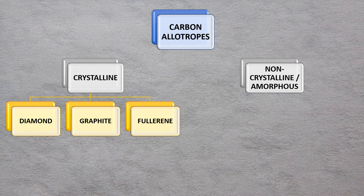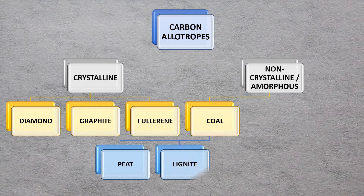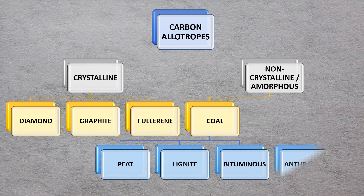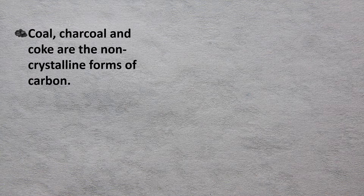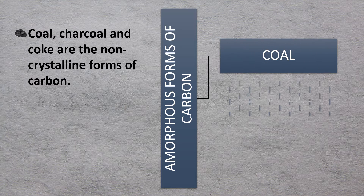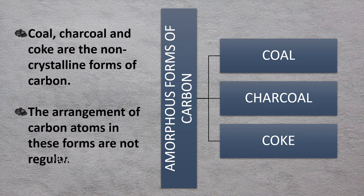The other type is the non-crystalline or amorphous form, which we will be studying in this video. These include coal — peat, lignite, bituminous, and anthracite — as well as charcoal and coke. Coal, charcoal, and coke are the non-crystalline or amorphous forms of carbon, and the arrangement of carbon atoms in these forms is not regular.